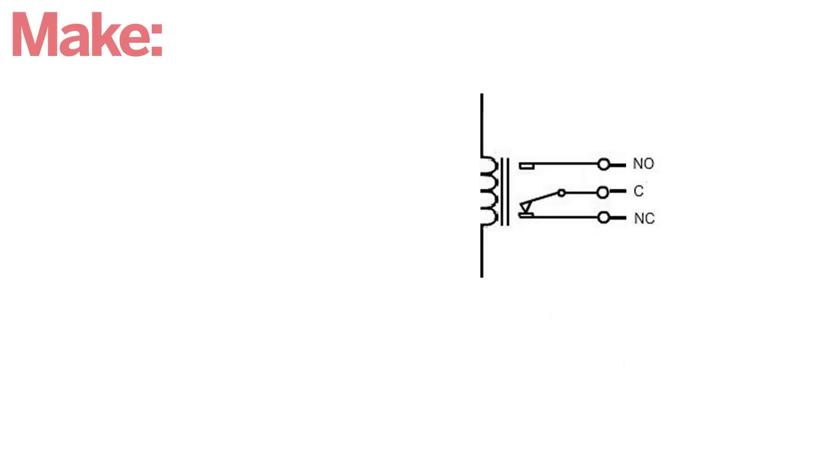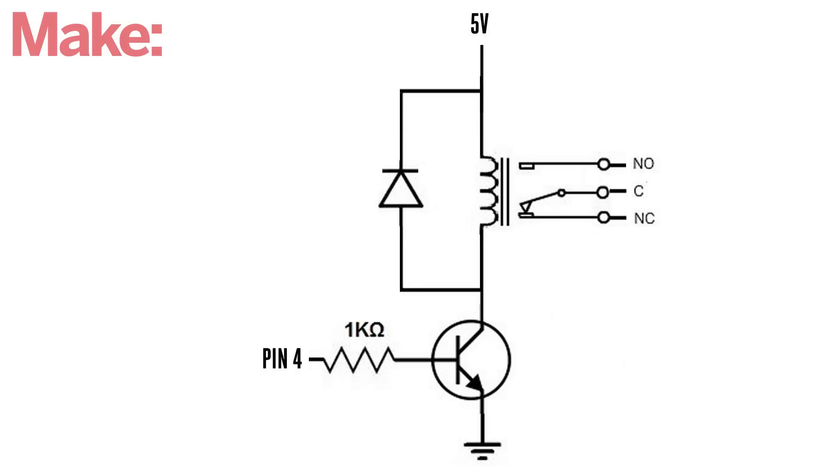Start by connecting the coil of a 5V relay between the 5V pin and the collector of an NPN transistor. The emitter of the transistor is connected to ground, and the base is connected to a digital pin through a 1K resistor. A diode is attached across the coil of the relay to protect against voltage spikes when the relay turns off.